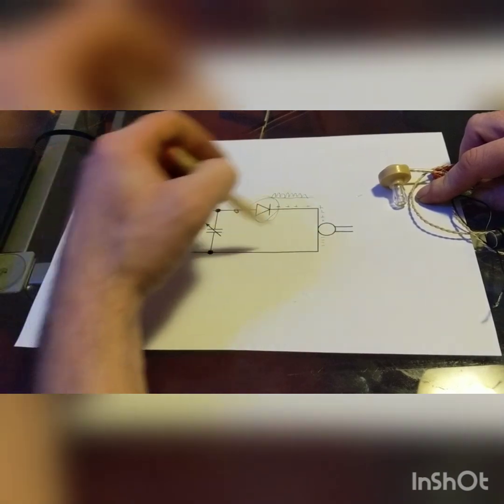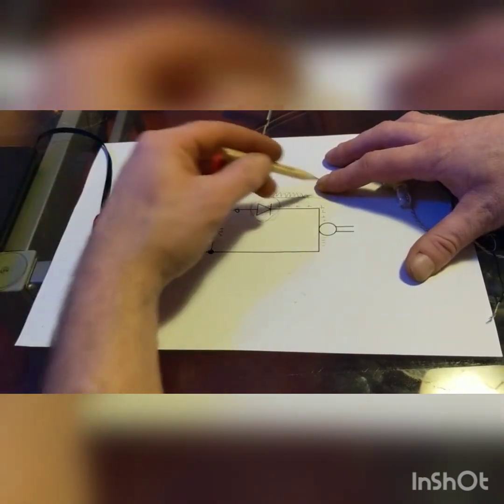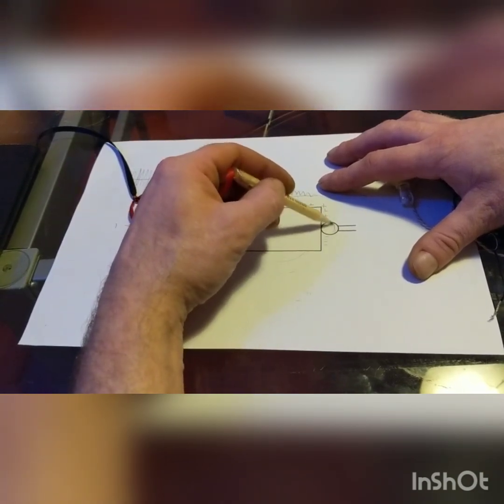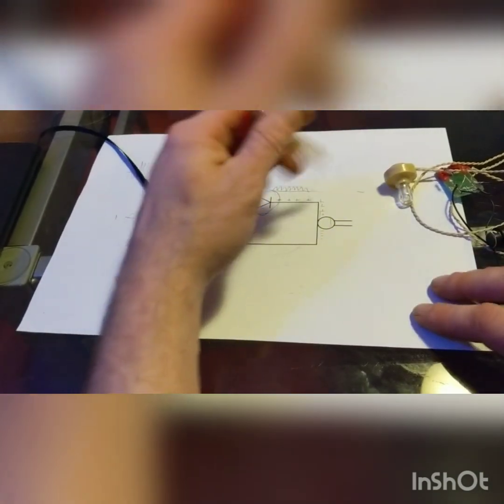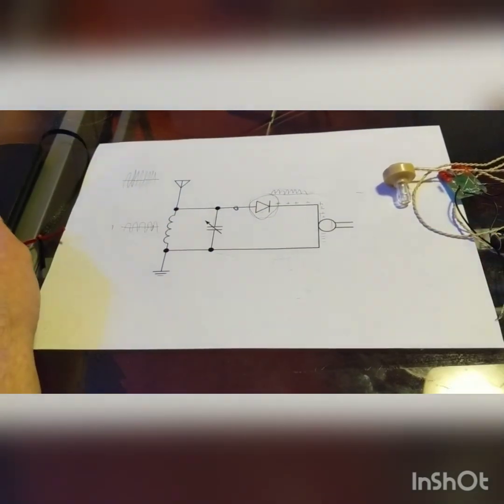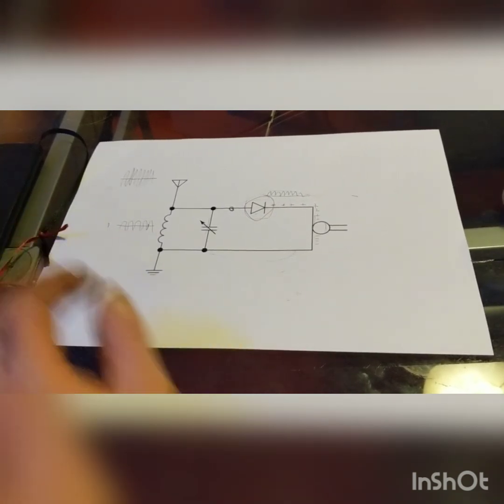But germanium diodes in themselves are leaky. They can reverse the flow of this whole section here. It can leak back to steady the charge here. Now what makes this useful is more important to us.